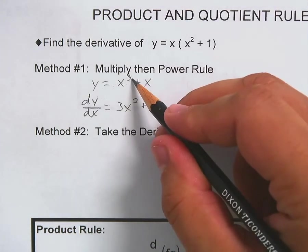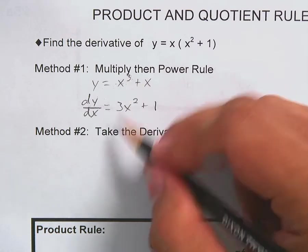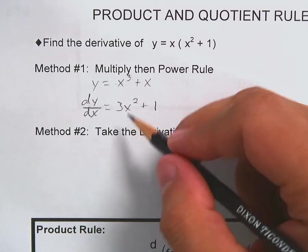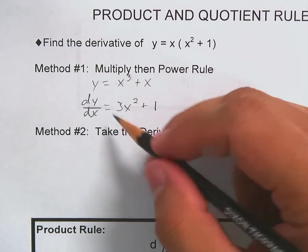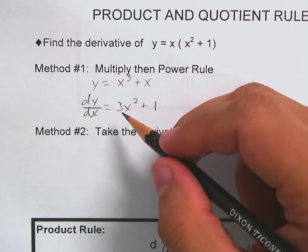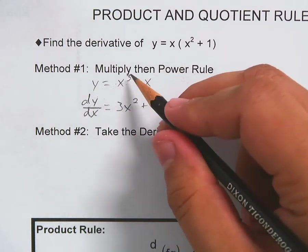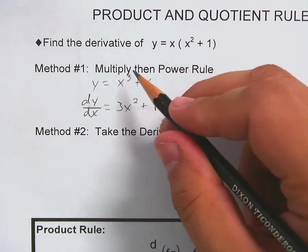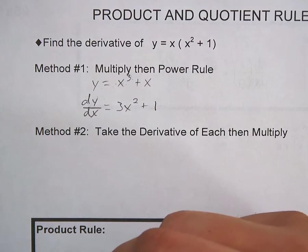Notice that if the function is cubic, the derivative should be quadratic. We've been talking about that — you're dropping the power, so it should always be one power less.